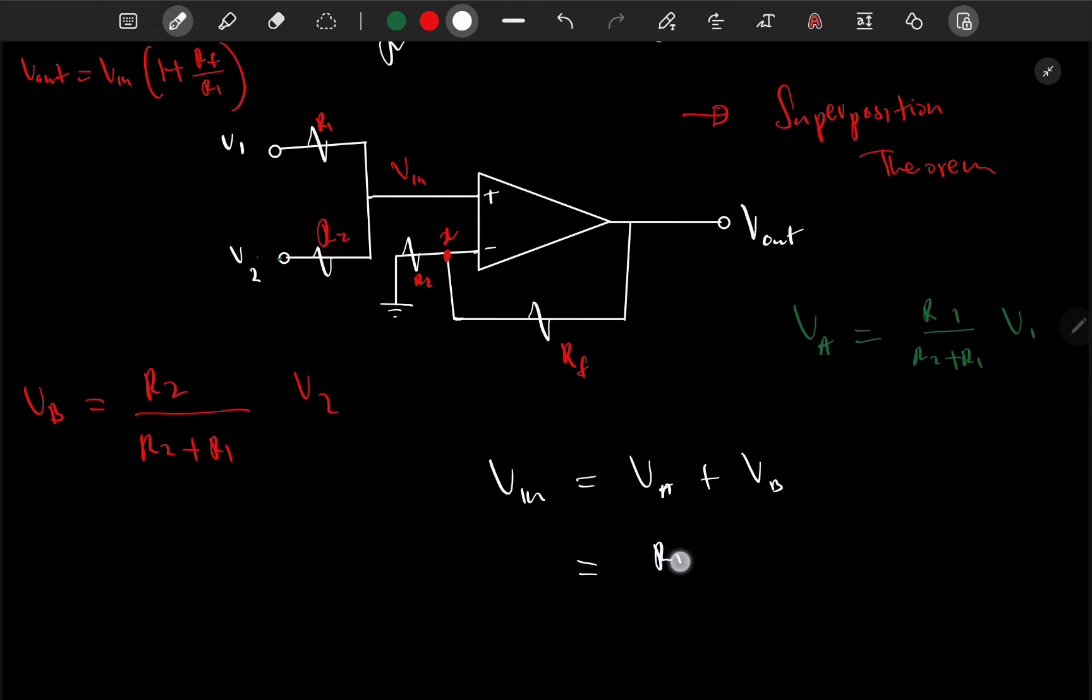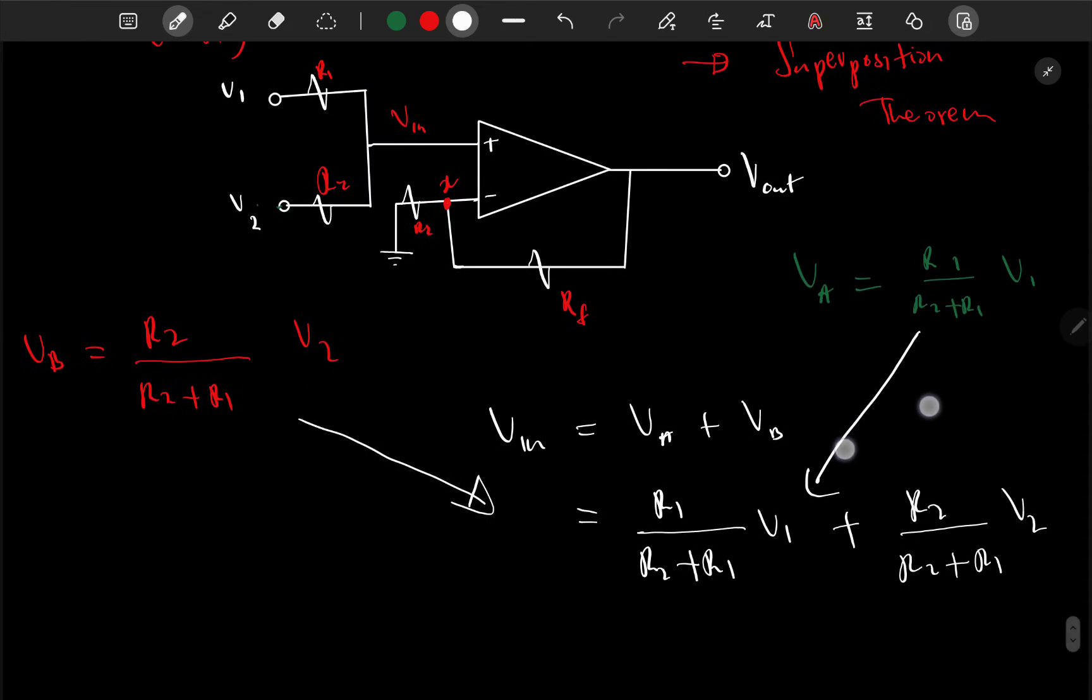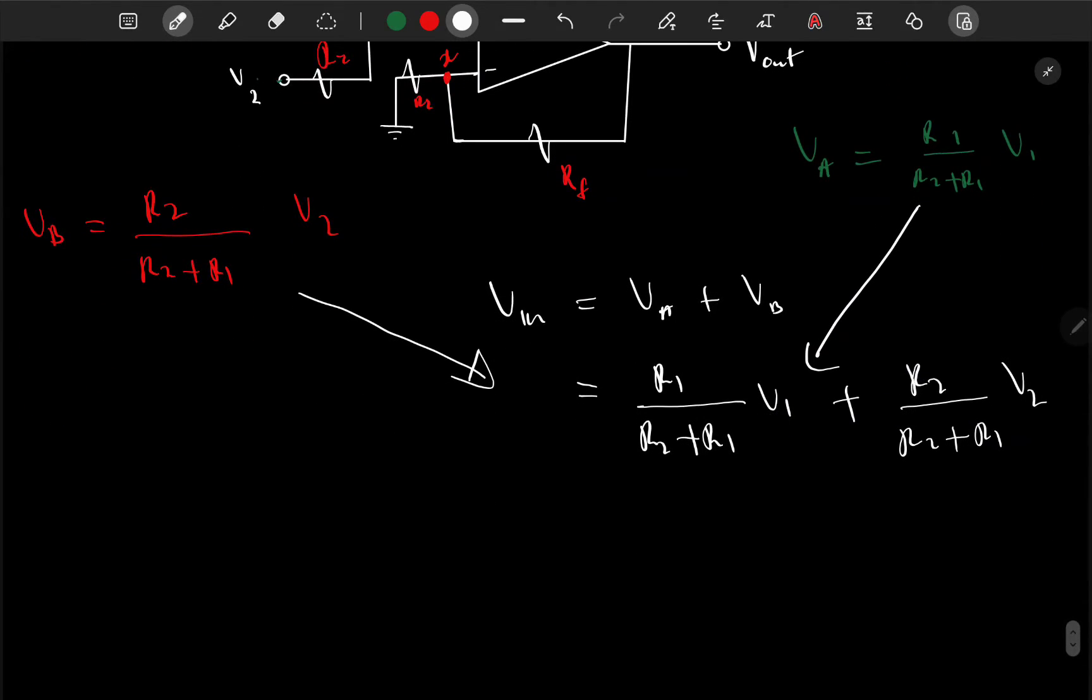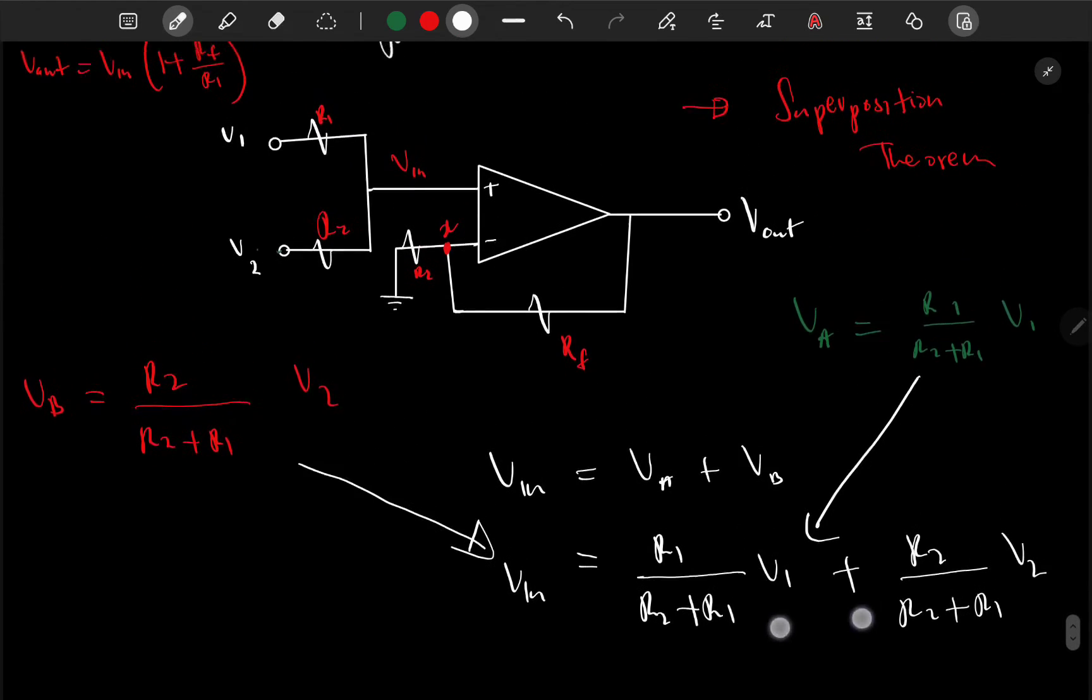So V_in will be R_1 all over R_2 plus R_1 times V_1, that I'm subbing that here, and then plus R_2 all over R_2 plus R_1 times V_2. So this is our V_in. Also on the beginning of the video we took something.